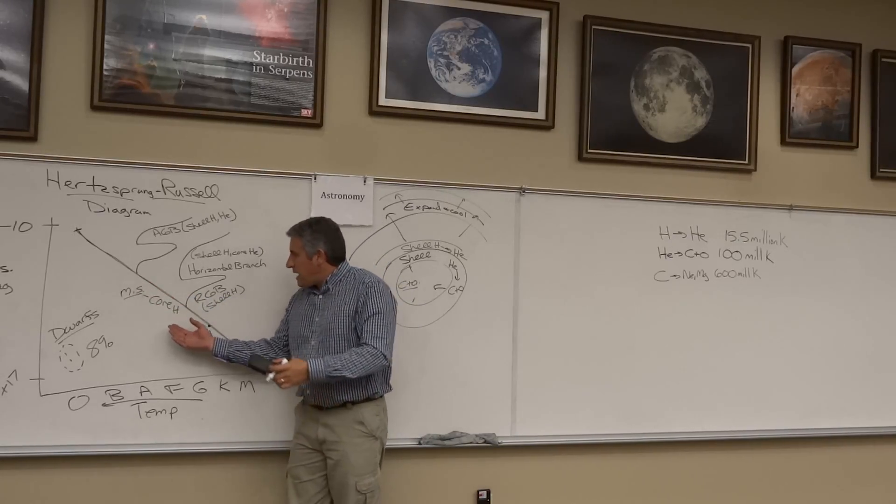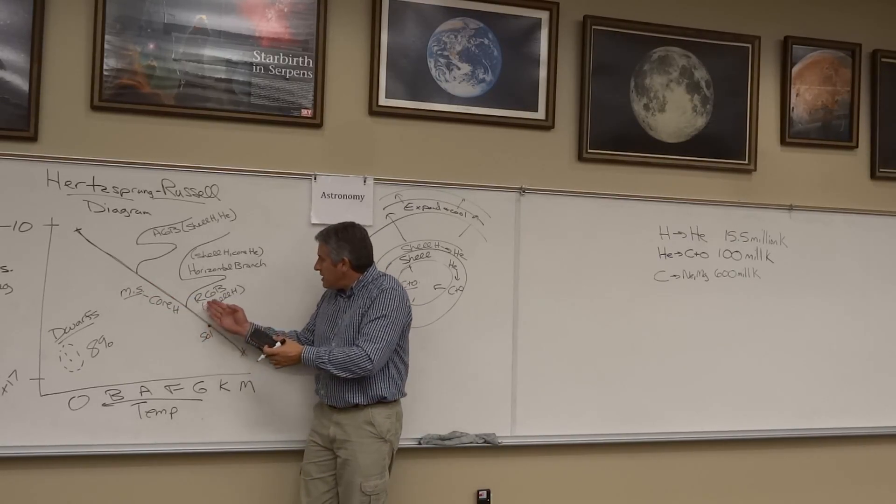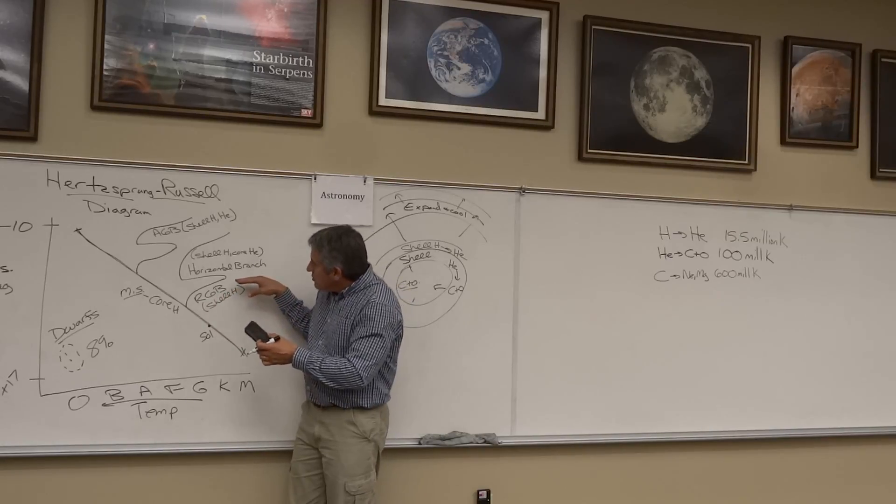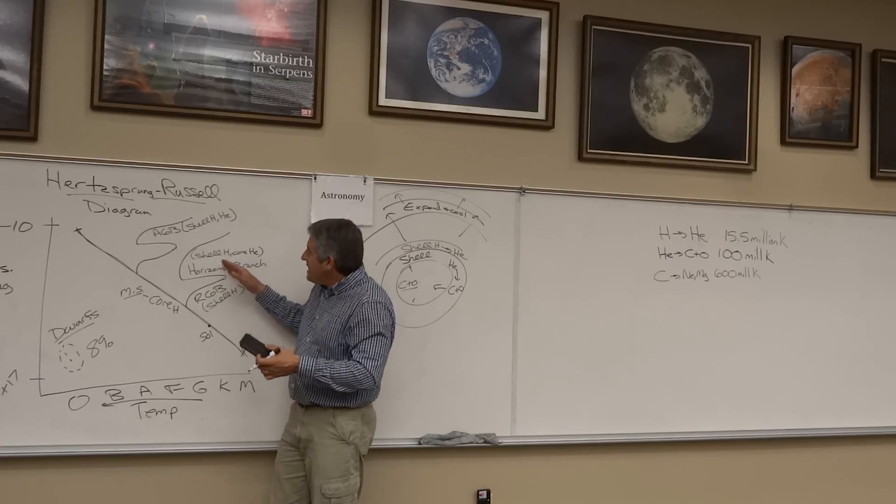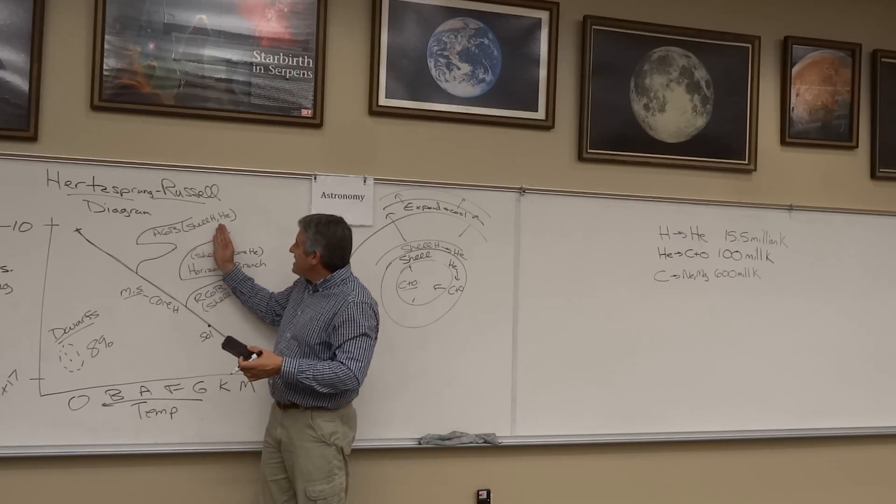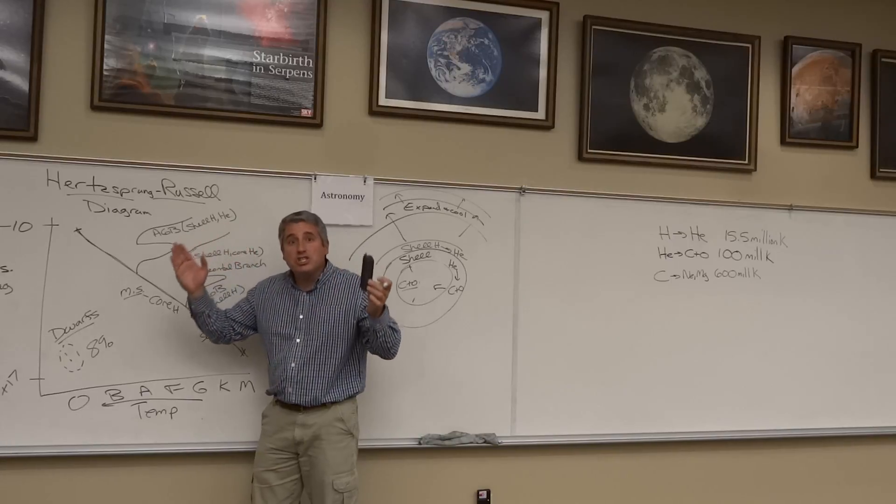So the main sequence is powered by a core of hydrogen. The red giant branch, shell of hydrogen. The horizontal branch gets the core involved with helium and the shell of hydrogen. And now we've got this secondary shell of hydrogen and helium on the AGB.